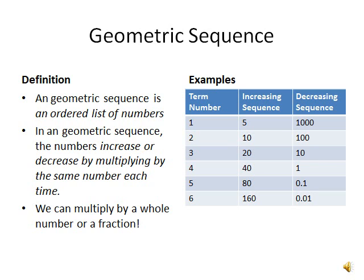Next, we'll look at the decreasing sequence. These numbers are 1,000, 100, 10, 1, 0.1, and 0.01. In this decreasing sequence, we multiply by 1 tenth each time.